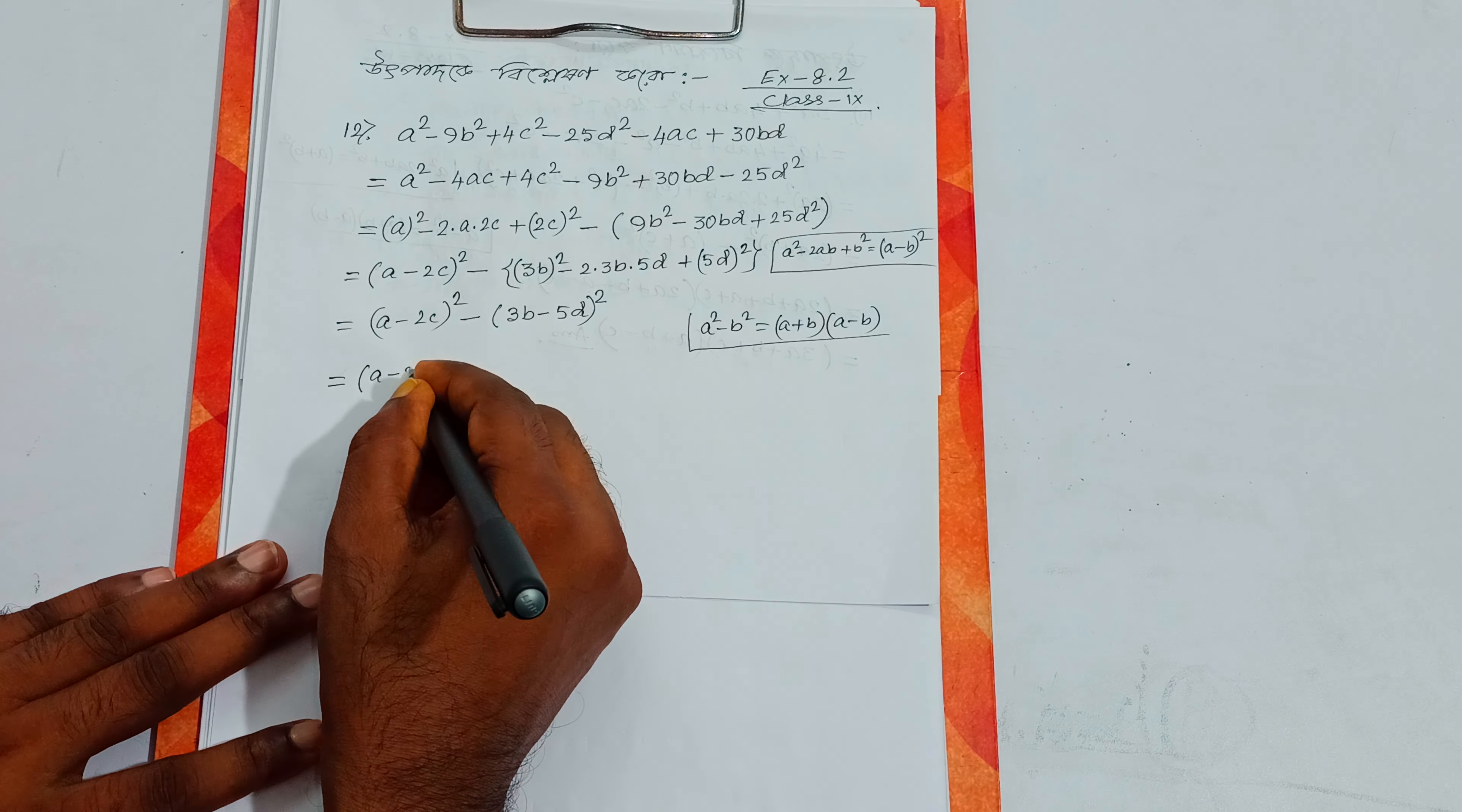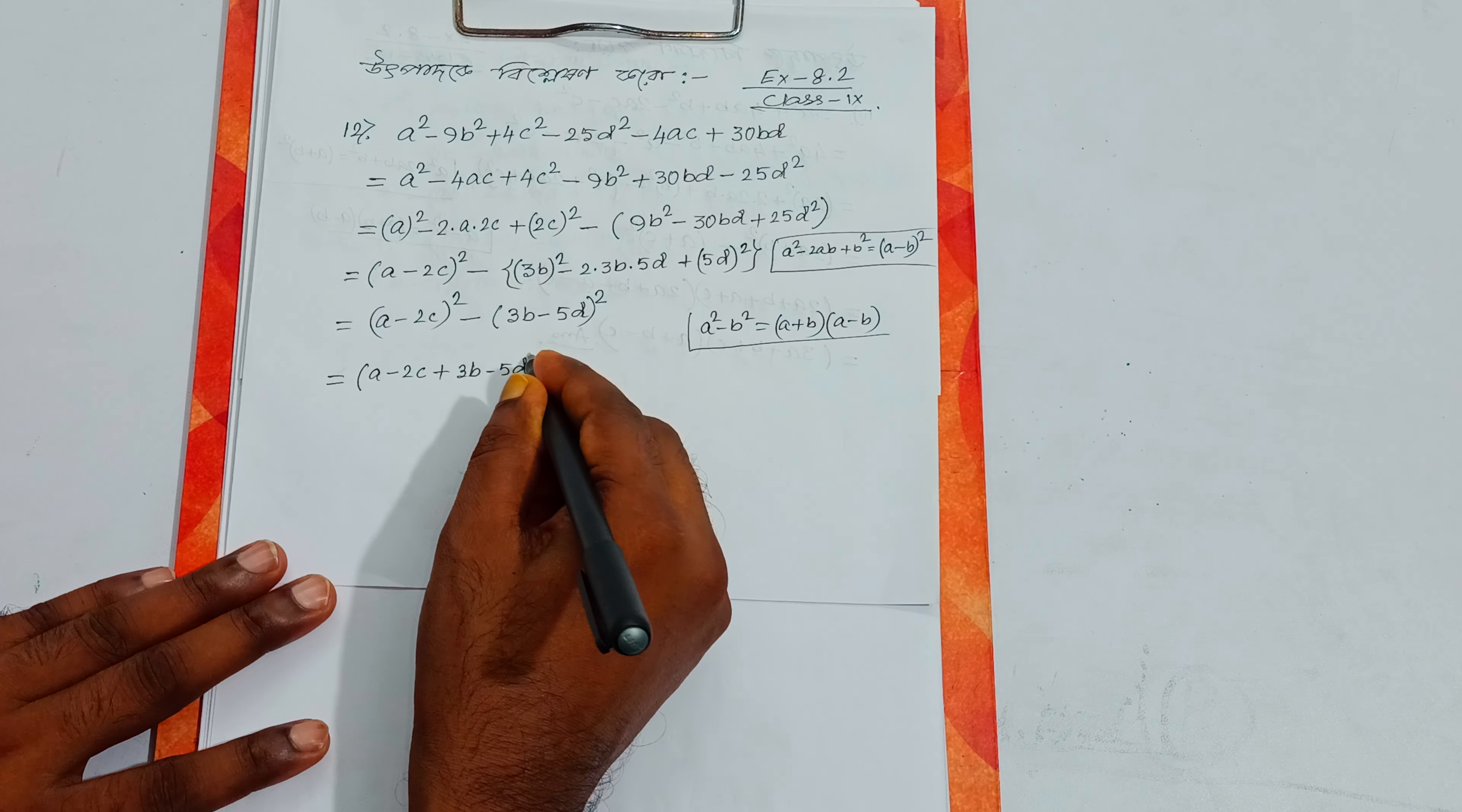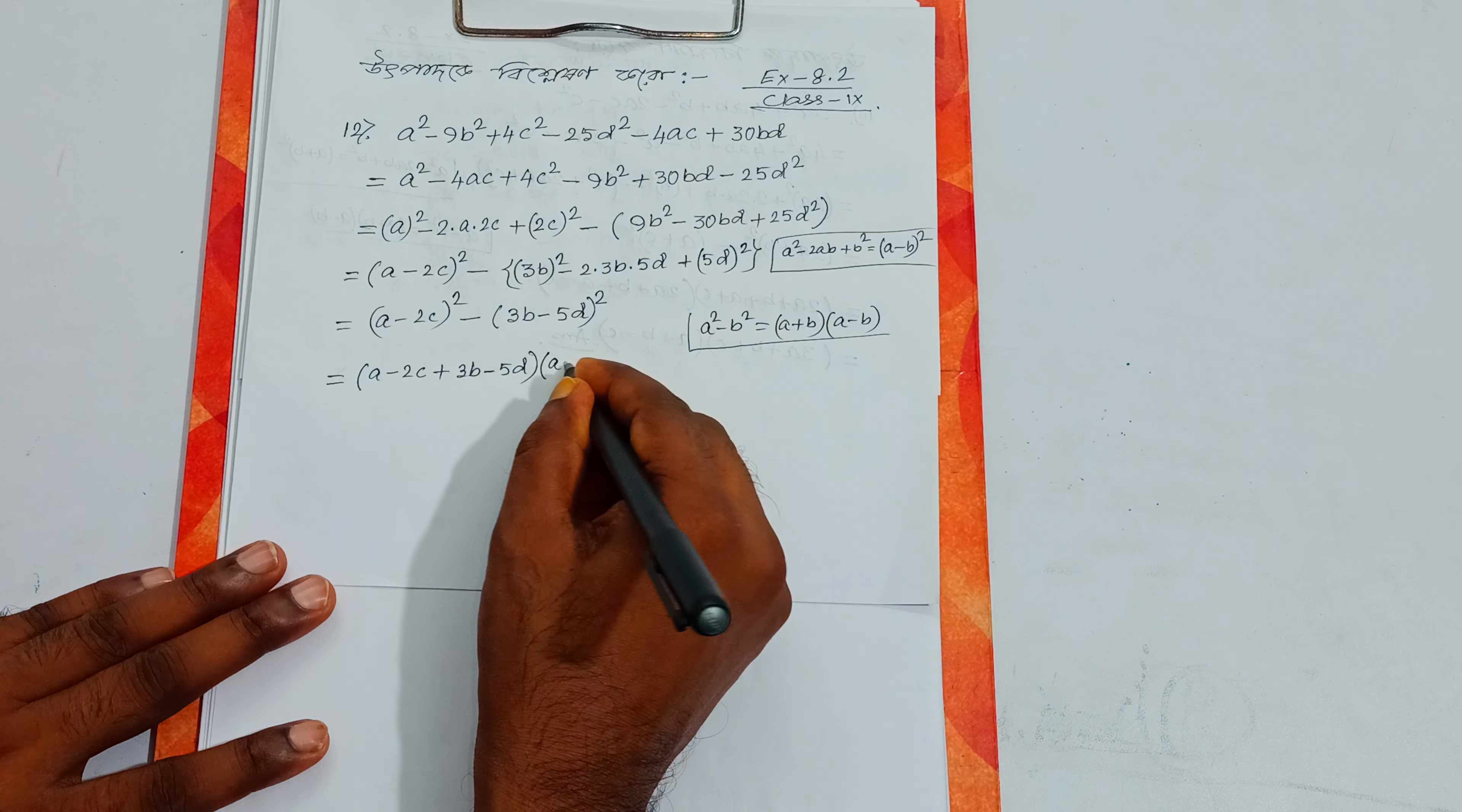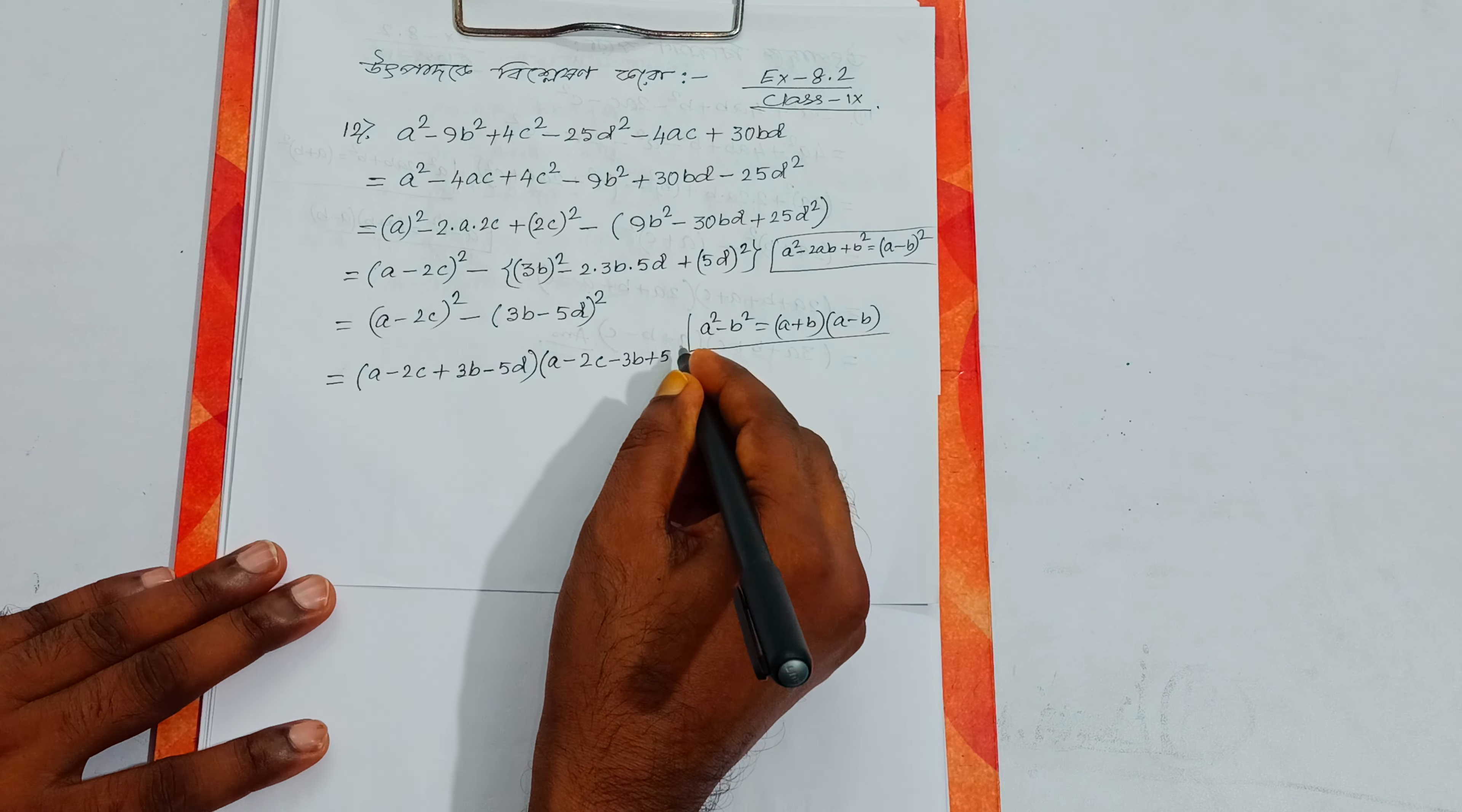Therefore, the final factored form is: (a minus 2c plus 3b minus 5d) into (a minus 2c minus 3b plus 5d).